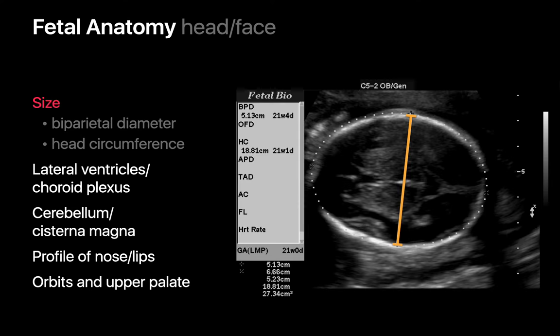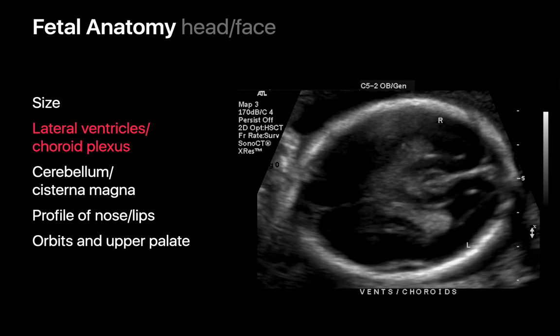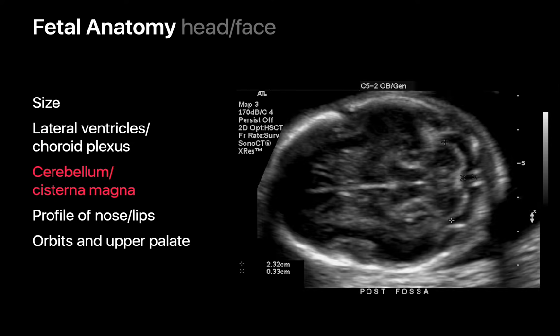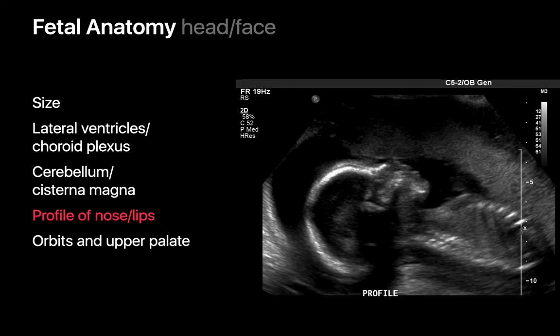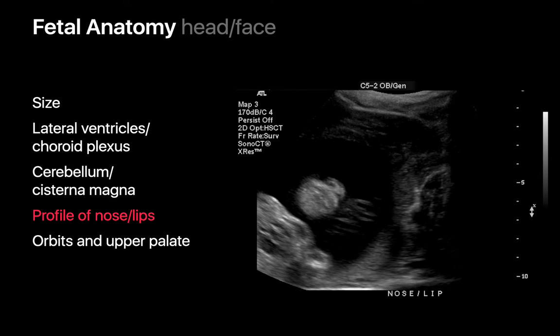The assessment of fetal anatomy begins with the fetal head and face. We evaluate the size of the fetal head by measuring its biparietal diameter and circumference. We evaluate the lateral ventricles of the fetal brain and choroid plexus, the cerebellum and cisterna magna, measuring the width of the cerebellum. We estimate the size of the cisterna magna by measuring from the posterior margin of the cerebellar vermis to the inferior surface of the occipital bone — distances over 10 millimeters are usually abnormal. We evaluate the fetal chin, lips, and nose to rule out clefts; 3D ultrasound can be useful here.